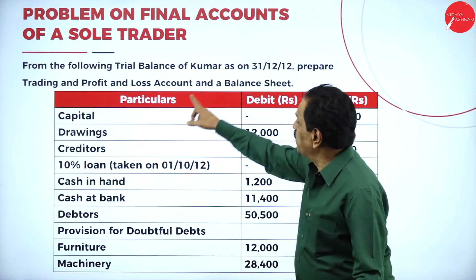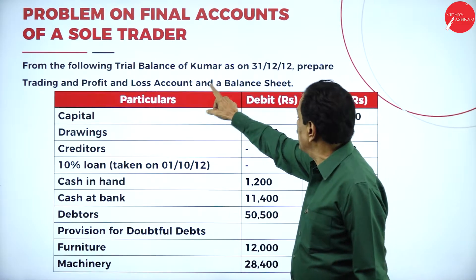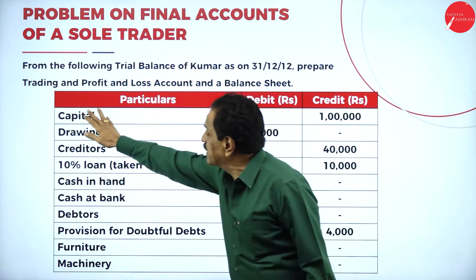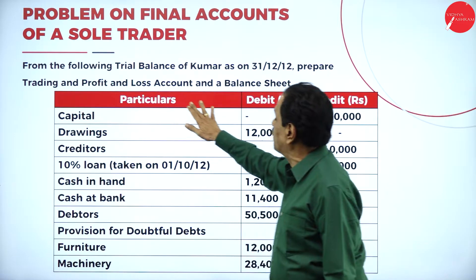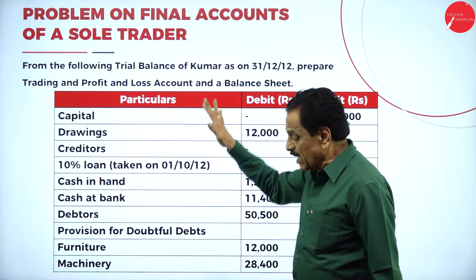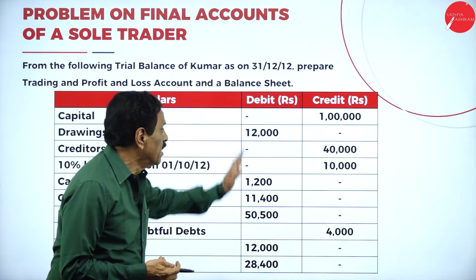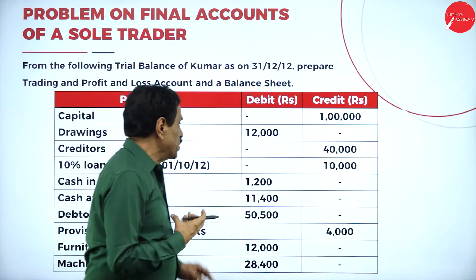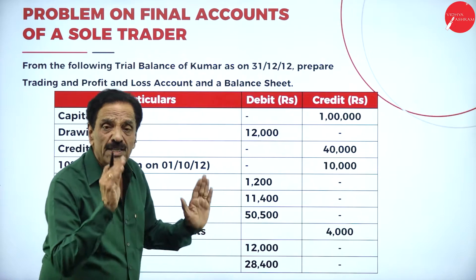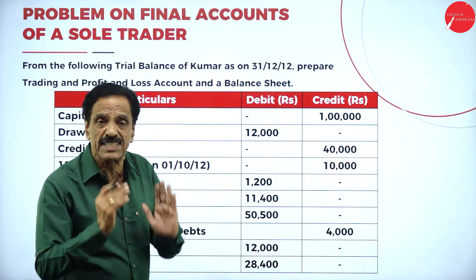From the following trial balance of Kumar, a sole trader, as on 31 December 2010, prepare the trading and profit and loss account and a balance sheet. They have given a trial balance. The debit side — as I told you — shows assets and expenses; the credit side shows incomes and liabilities.